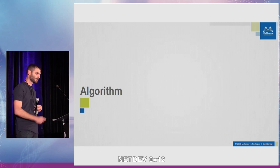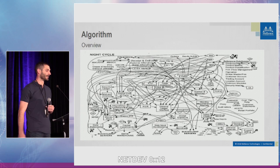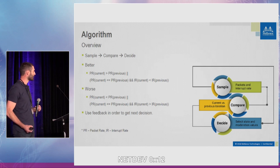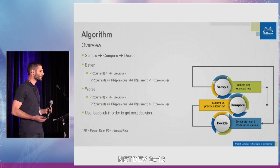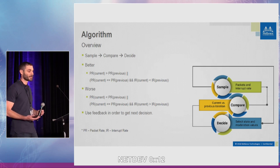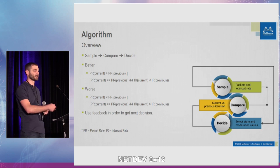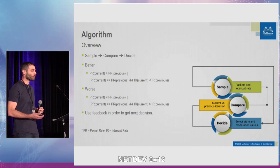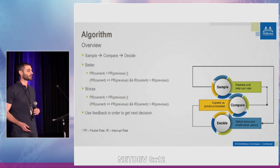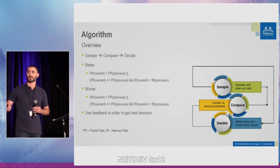The algorithm. We tried to make it as simple as possible. What we do is sampling, comparing, and deciding. We sample the current state of the system, compare it to the previous cycle, and then decide what to do. We decide what is better and worse, and we use feedback from the previous cycle to get a better decision.